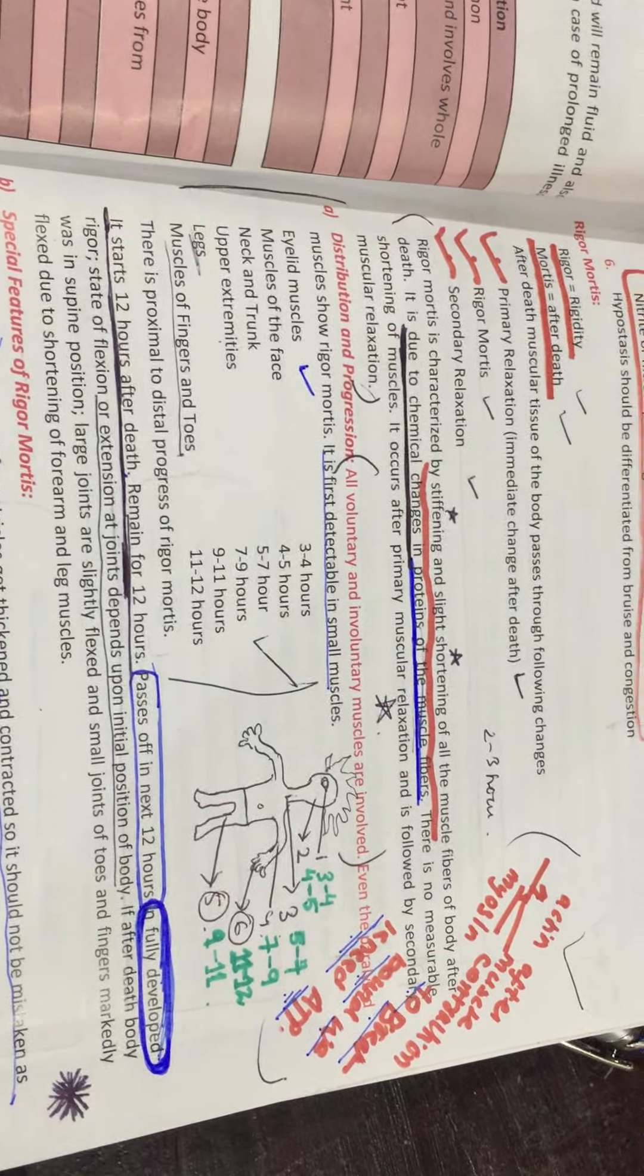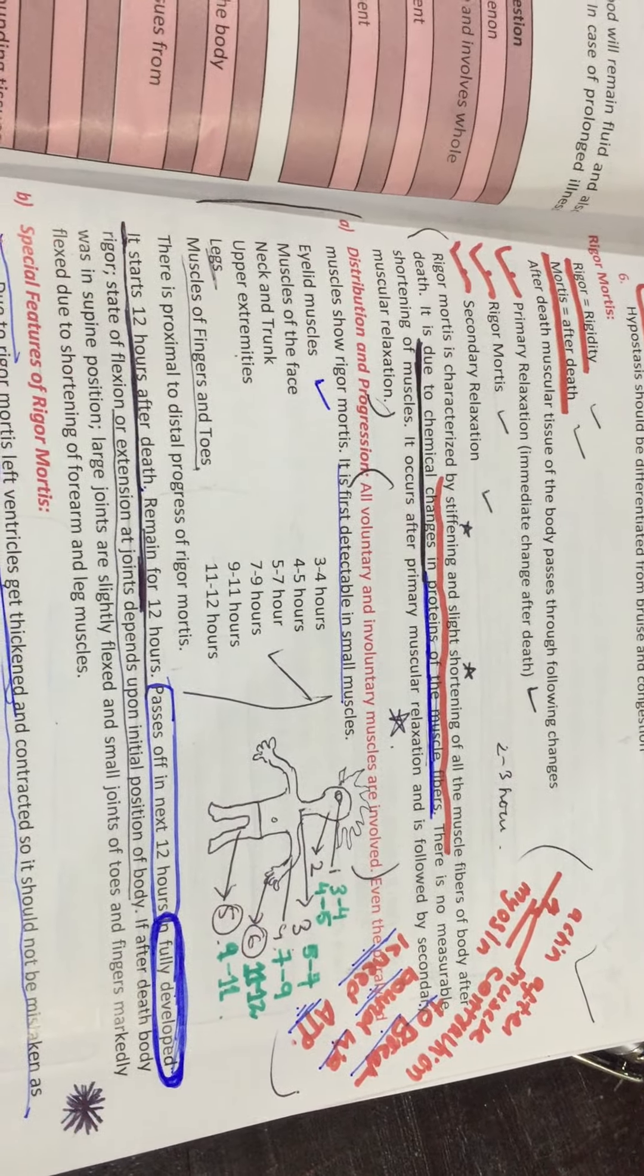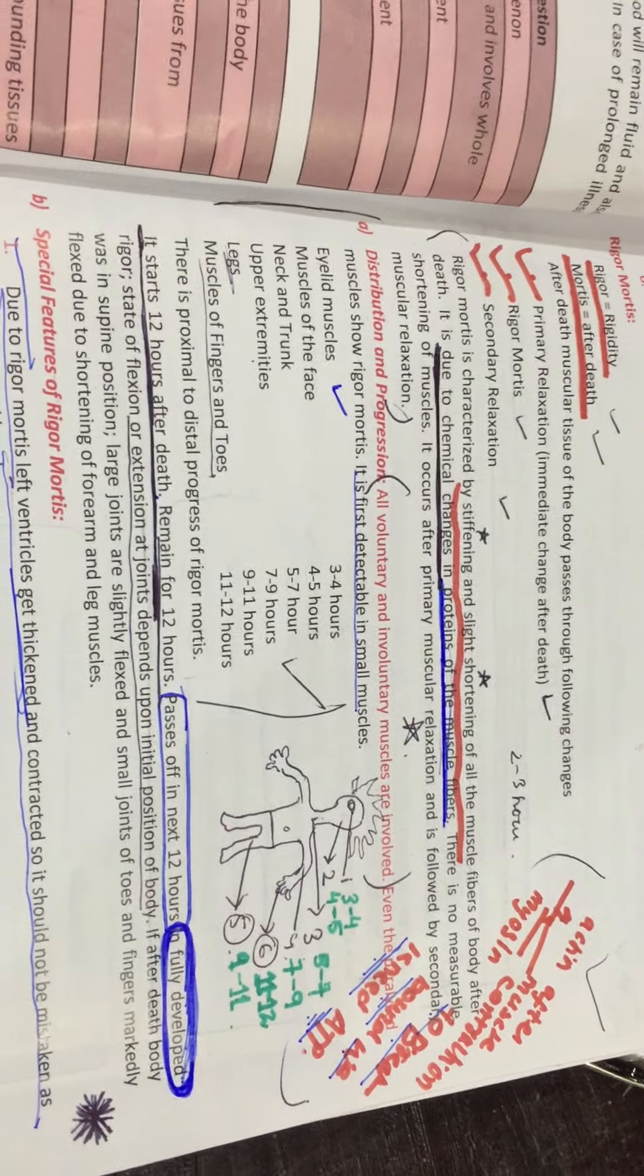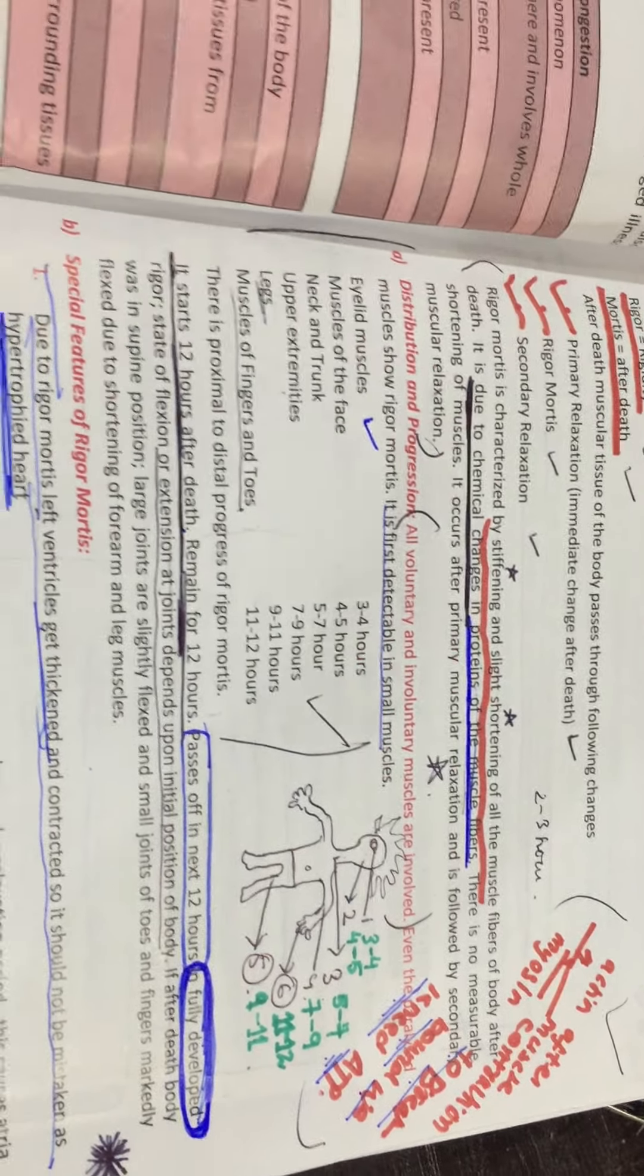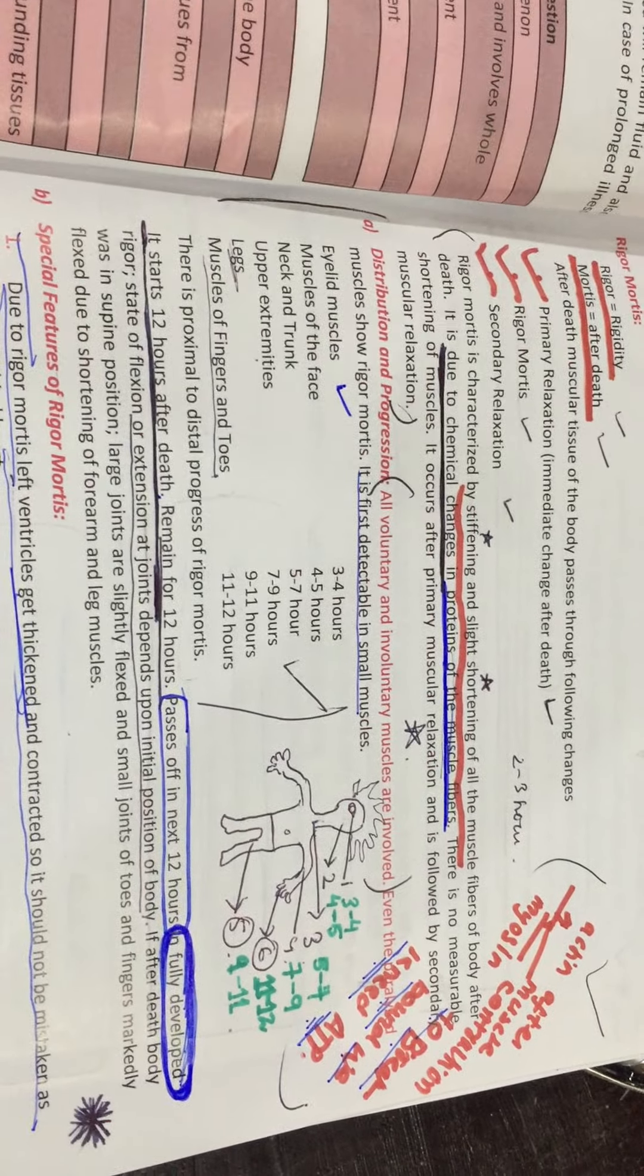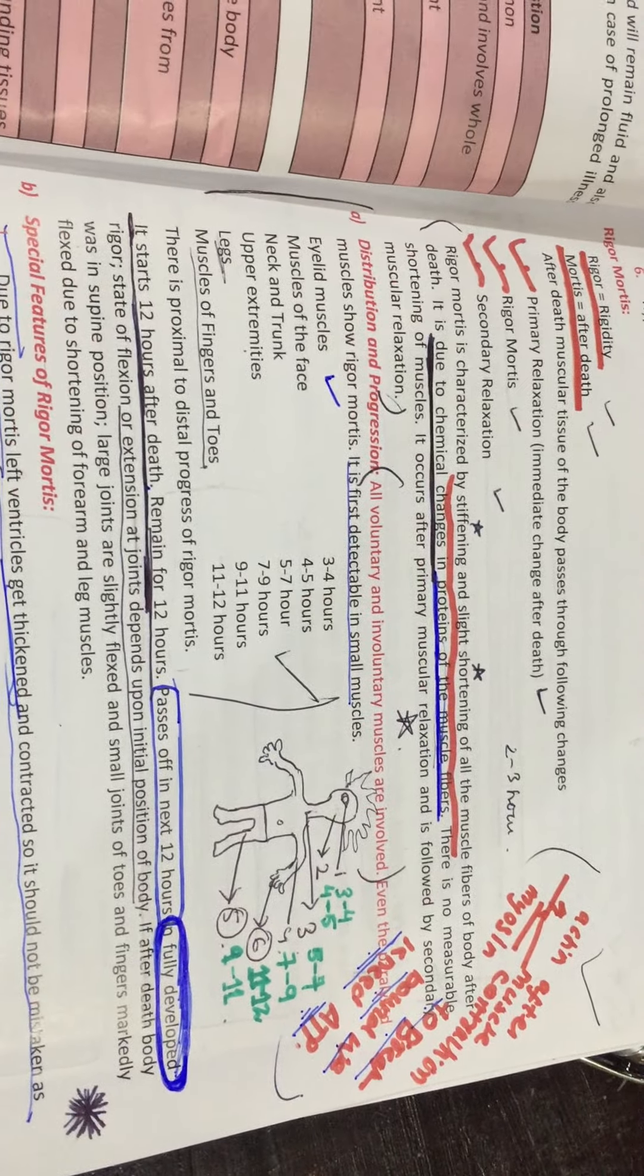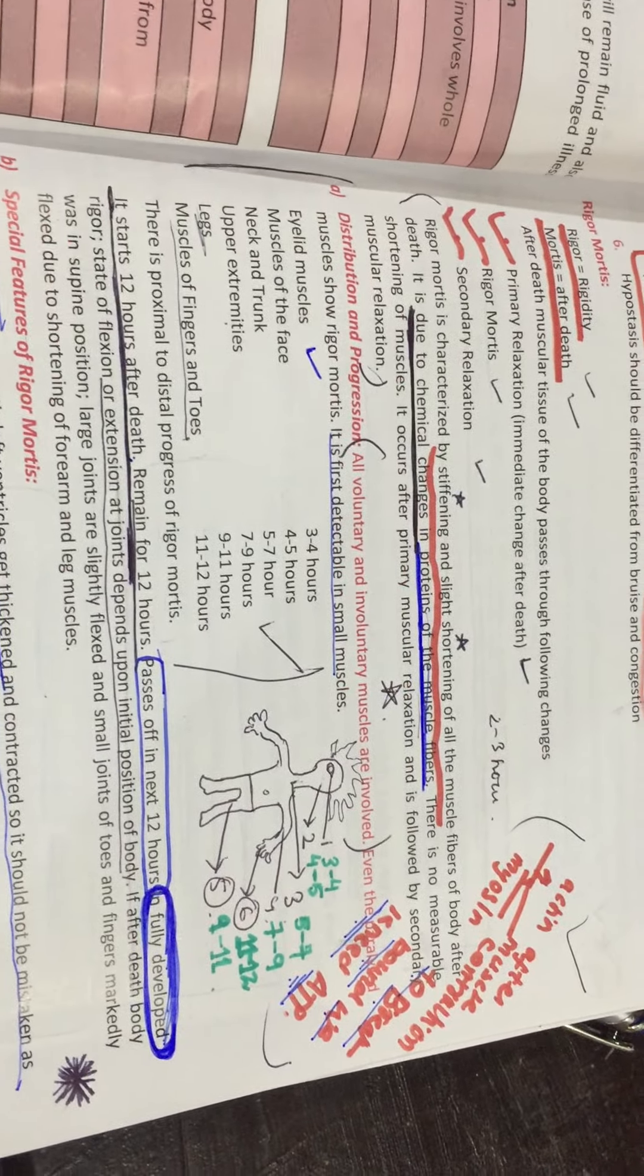Normally we have actin-myosin combined, the muscle contracts, it becomes dephosphorylation, and then it becomes relaxation. But what happens in rigor mortis? It becomes phosphorylation and actin-myosin filaments combine, the muscle contracts, but there is no dephosphorylation. Because of that, there is going to be rigor mortis. It occurs about 2 to 3 hours after death and lasts about 12 hours.